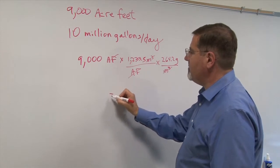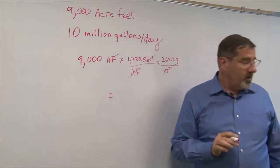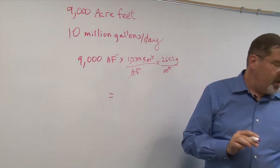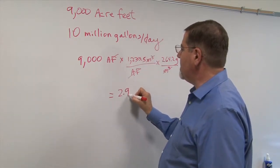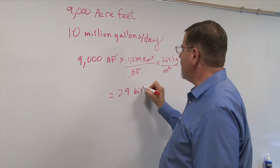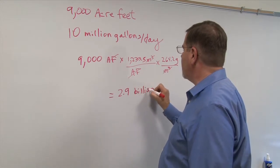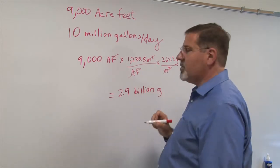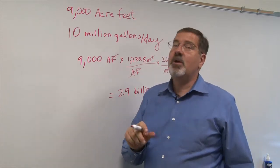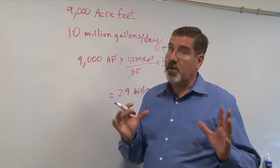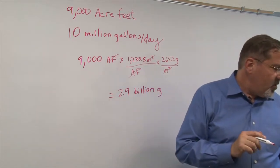So when you multiply this out, what you get is the total number of gallons in Loch Lomond Reservoir, which is 2.9 billion gallons of water. So that's what is in reserve for the city of Santa Cruz when that reservoir is full. So now it's pretty simple.